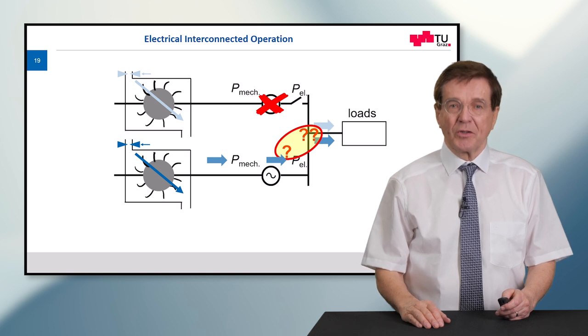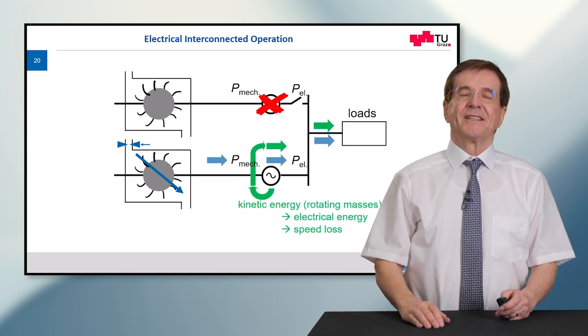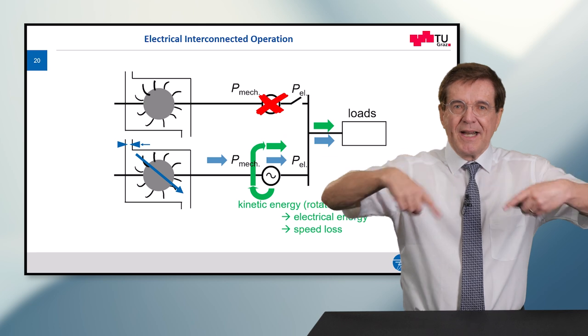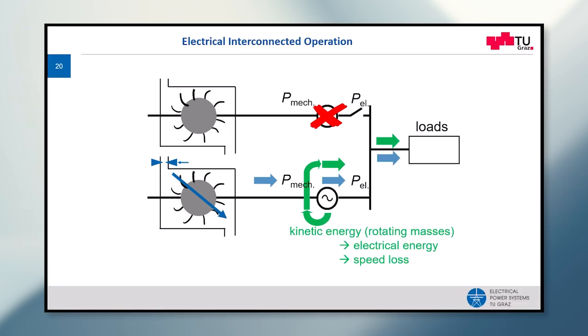And what is that? This is the kinetic energy of the rotating masses which is turned into electrical energy, and this leads to a speed loss. The rotating energy is consumed and is reduced, and therefore the speed goes down because the speed is rotating energy.